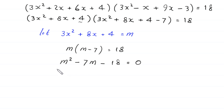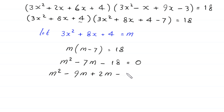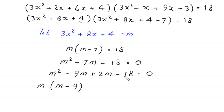This is a quadratic equation and it is factorable. We write m squared and split negative 7m as negative 9m plus 2m, minus 18, equals 0. From the first two terms we factor out m, leaving (m minus 9), and from the last two terms we factor out plus 2, leaving (m minus 9), equals 0.